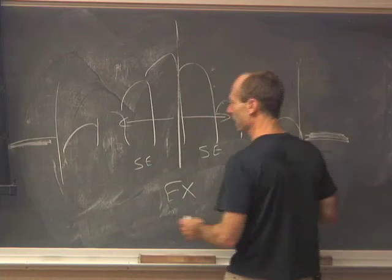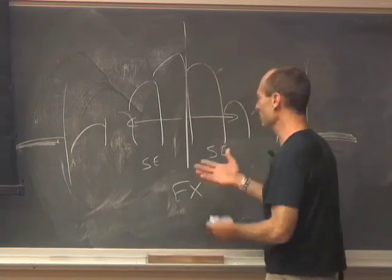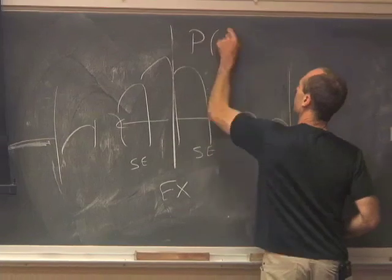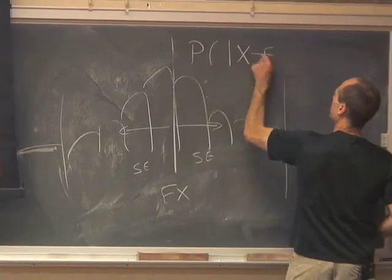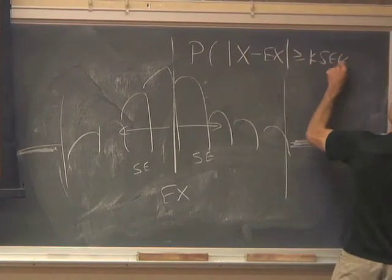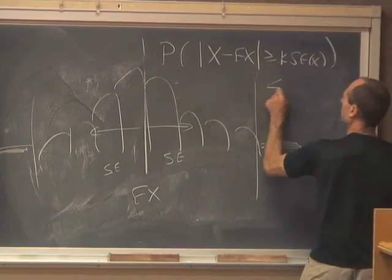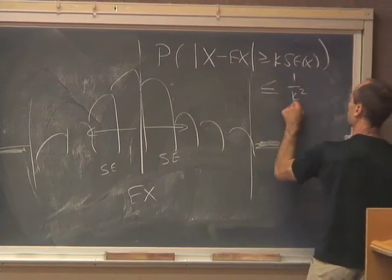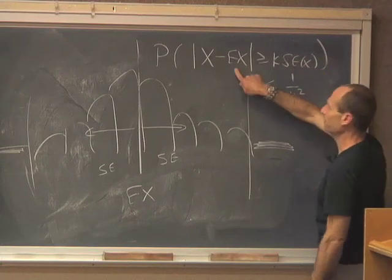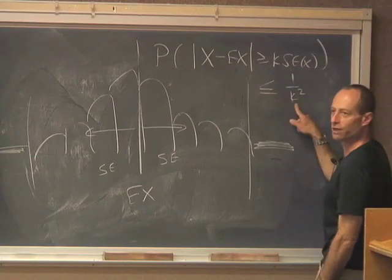So basically, Chebyshev's inequality is saying the chance that you are, the probability that the absolute value of x minus ex is greater than or equal to k times the standard error of x is less than or equal to 1 over k squared. So the chance that you are k or more standard errors away from the expected value is, at most, 1 over k squared.